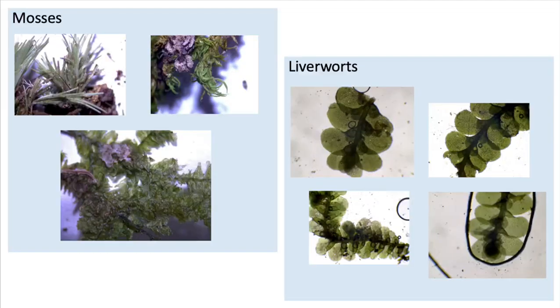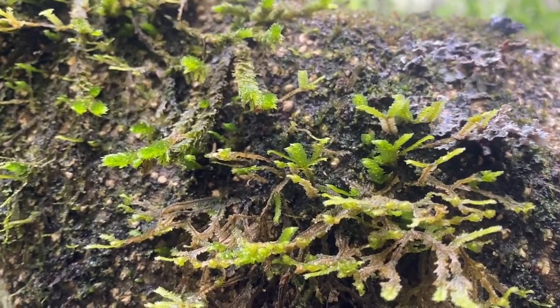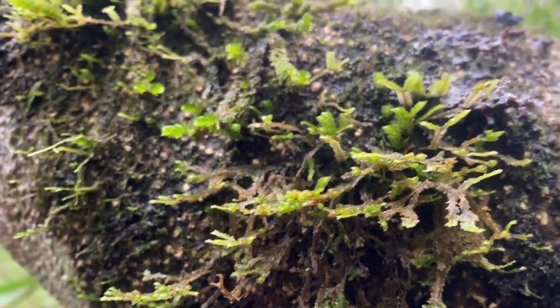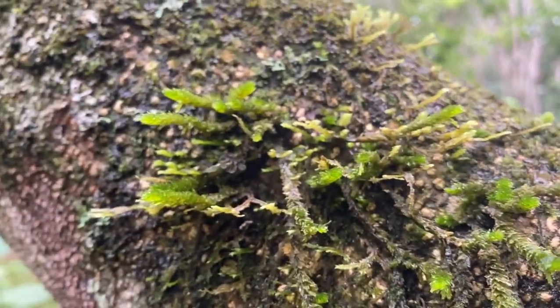Bryophytes are small flowerless plants that include the mosses and liverworts we are talking about in this study. Mosses tend to have a more spiky look to them, while liverworts have a rounder and flatter leaf. In this study, we are looking at bryophytes and how they live on palms and other trees within the rainforest. Because bryophytes tend to prefer a more textured bark, we hypothesize there will be more bryophyte cover on other trees due to the rougher bark they provide compared to the very smooth bark of the palm. The main objective of our study is to better understand the factors influencing where bryophytes are choosing to live — specifically, whether bark texture might be that driving factor.